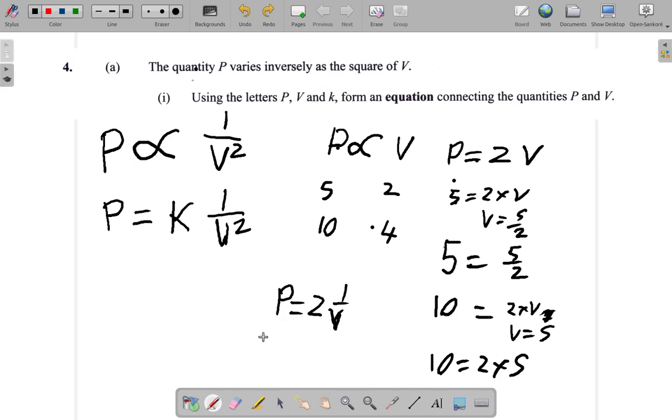In this case, suppose P is 6. You would say 6 equals 2 times 1 over V. And therefore, when you would say 6 over V equals 6 over 2, which is 3. 1 over V is 3, so V would be 1 third.